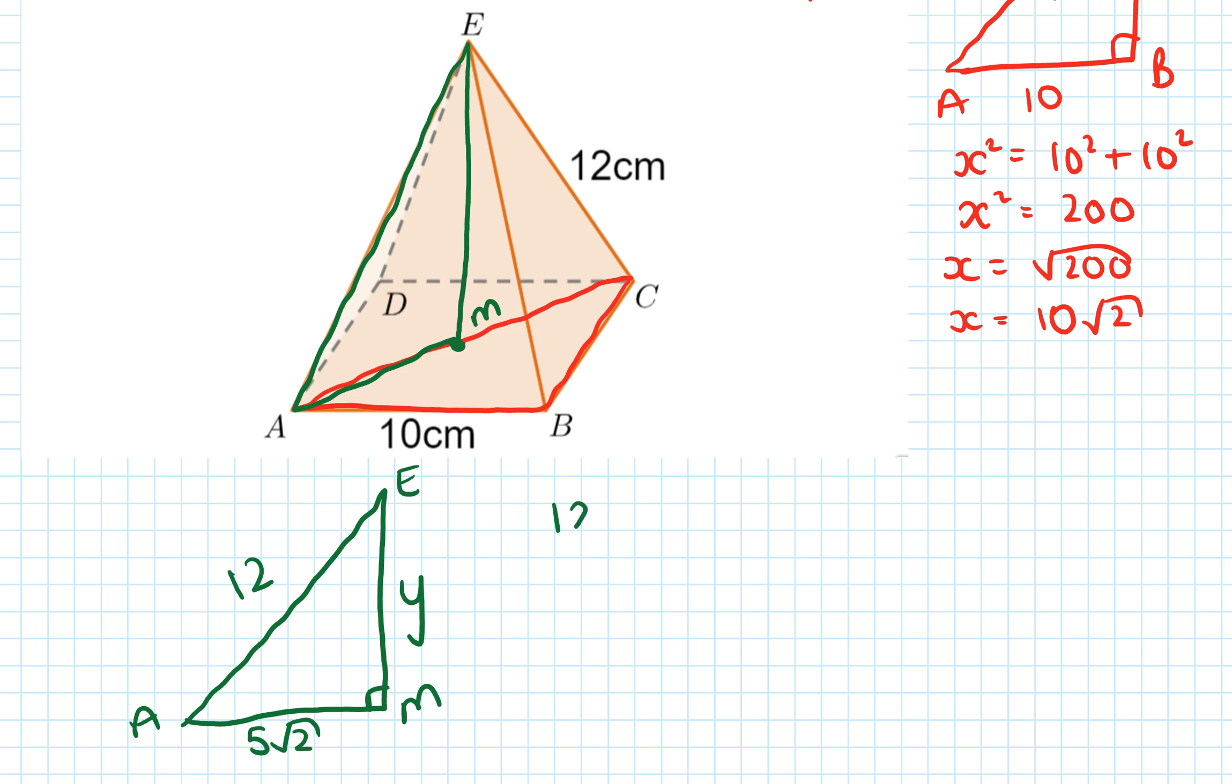So Pythagoras in this one says 12² equals (5√2)² - I'm putting it in brackets so that I know I'm squaring both the 5 and the √2, the whole thing is squared - plus y². That comes out as 144 equals 50 plus y².